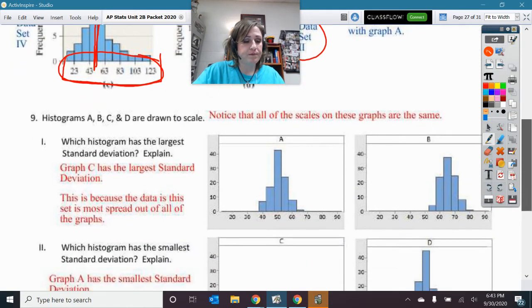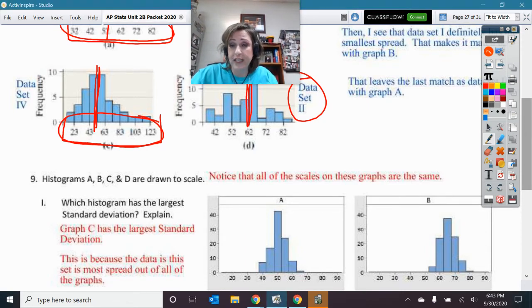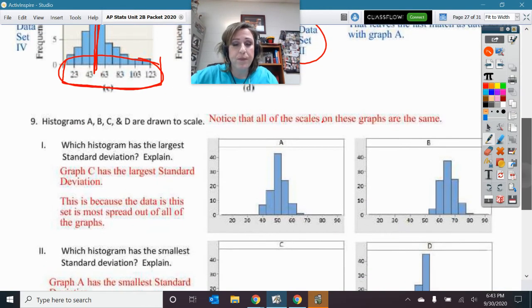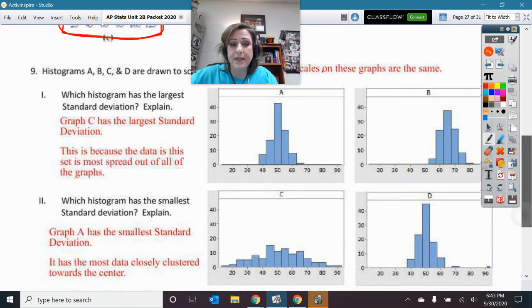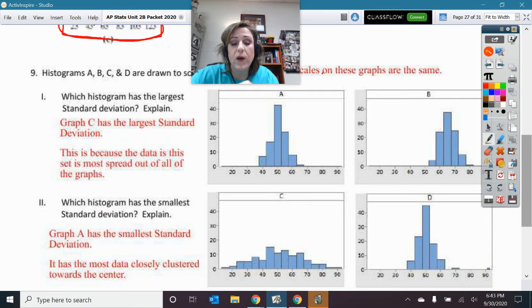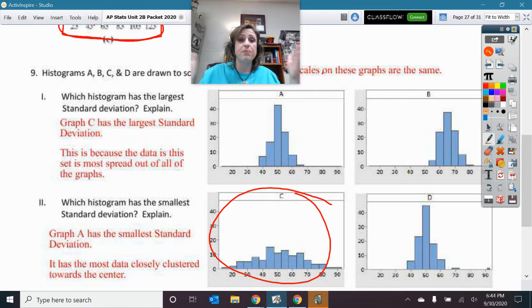All right. Number 9. Here we go. Let's see. So here these are all now drawn to the same scale. These were pretty tricky to look at. And I did that on purpose so that we could have some good discussion on them. Notice all the scales are the same, but they might be in a little bit different place. So here, which histogram has the largest standard deviation? Explain. Well, that one was easy to tell. This definitely has the largest standard deviation because it is most spread out.